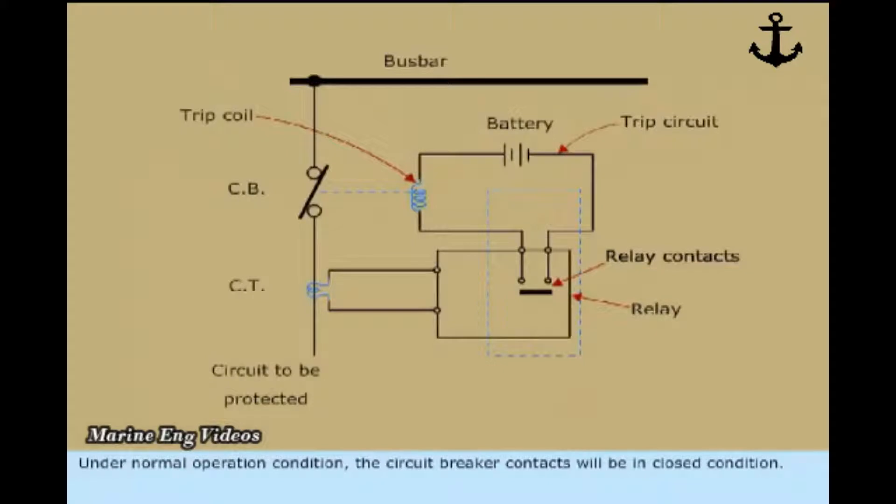Under normal operation condition, the circuit breaker contacts will be in close condition. Thus circuit breaker allows the flow of electricity across it.